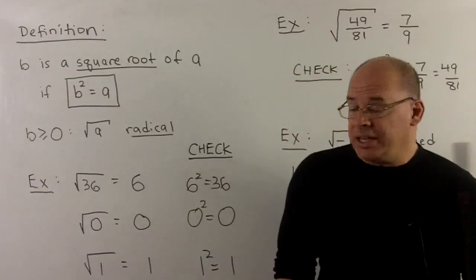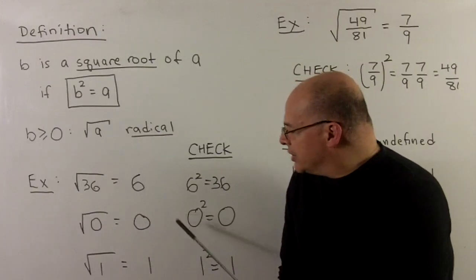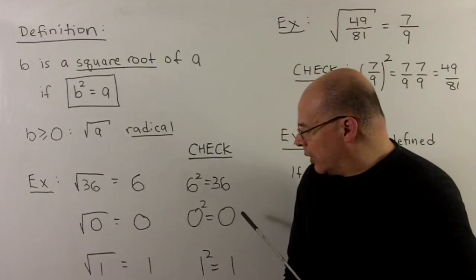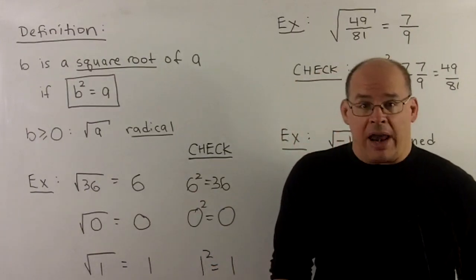If we go to basics, square root of zero, that's going to be zero because if we take zero and square it, zero comes out. This is the zero that we want to match to the radical symbol.